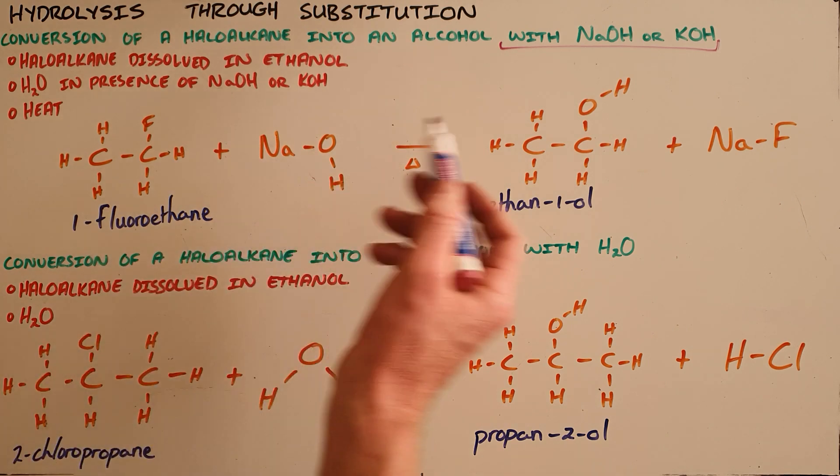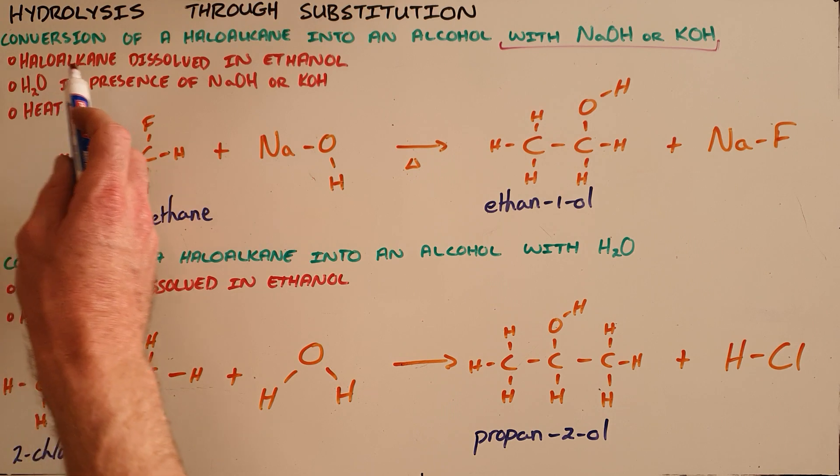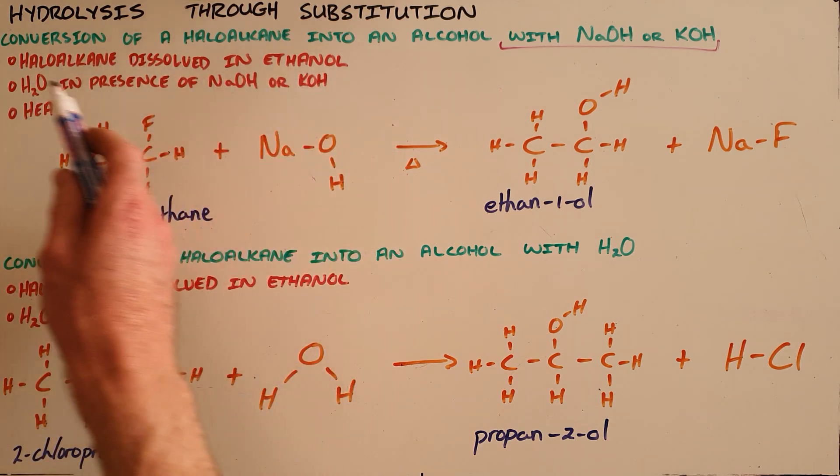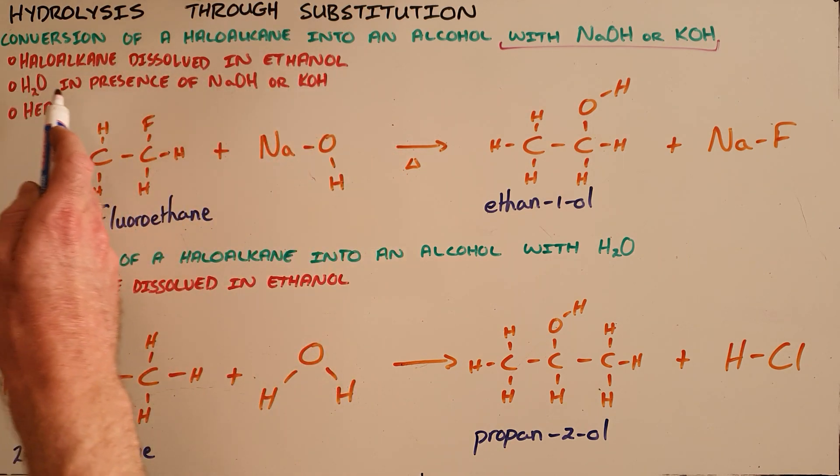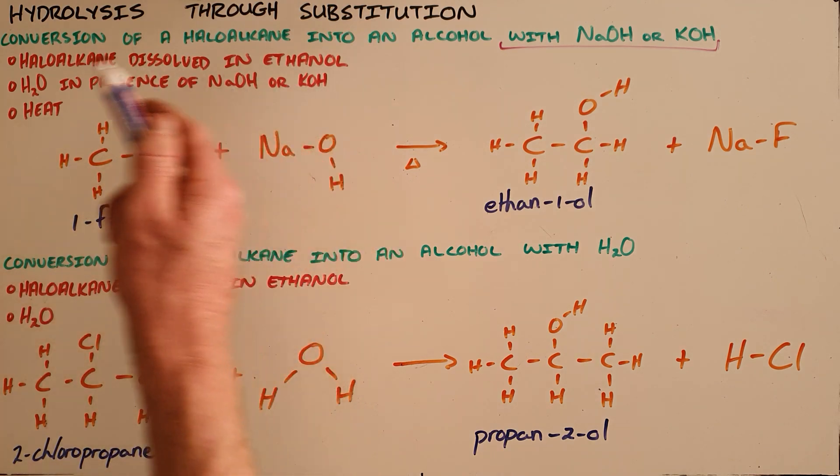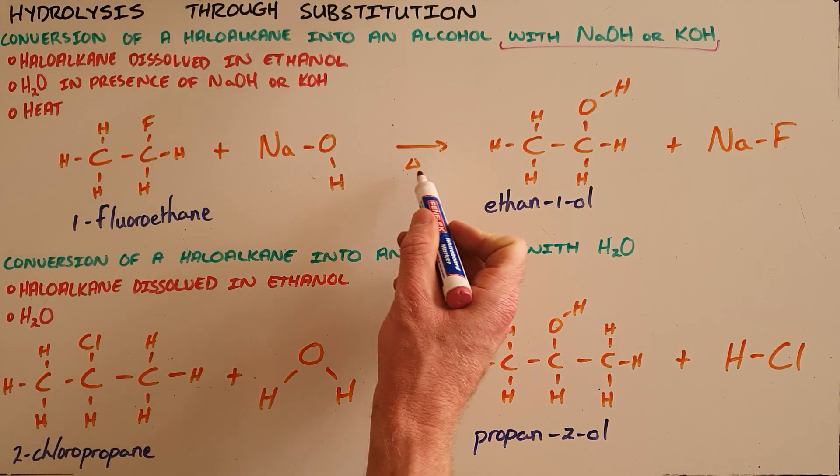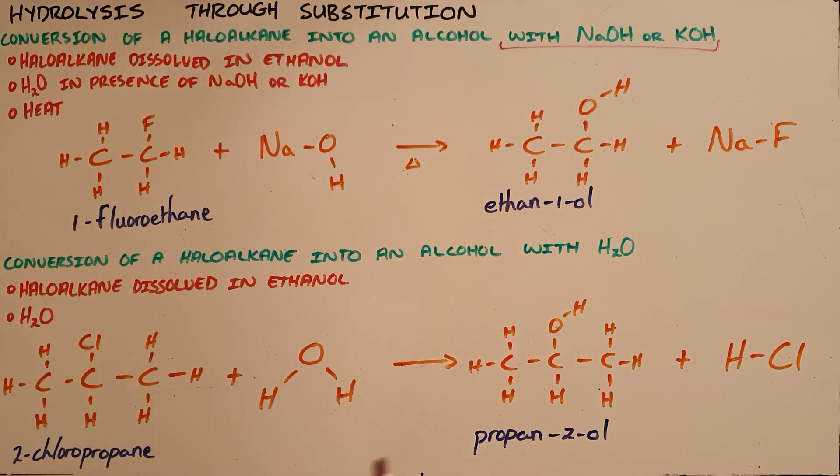The specific conditions required for this type of reaction are: firstly, the haloalkane must be dissolved in ethanol; second, there must be water present and sodium hydroxide or potassium hydroxide; and the reaction solution must be heated, demonstrated with the triangle underneath the arrow.